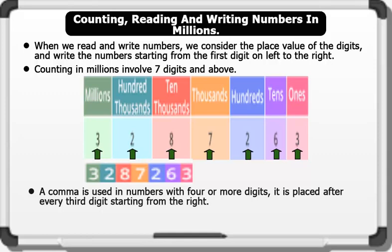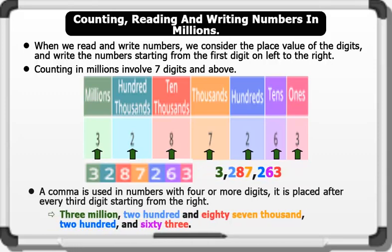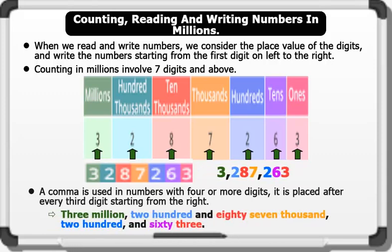Note that a comma is used in numbers with four or more digits; it is placed after every third digit starting from the right. Therefore, this expression is written as 3,287,263. Wonderful.